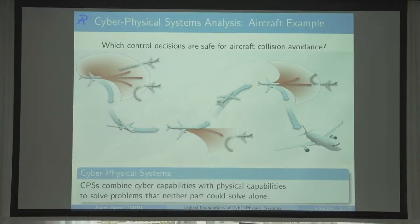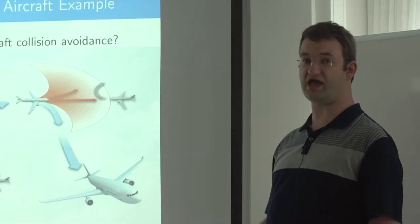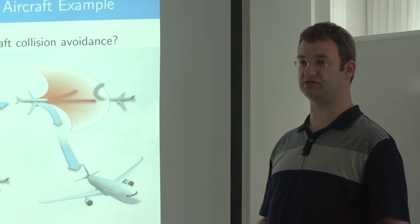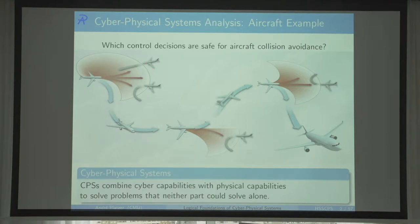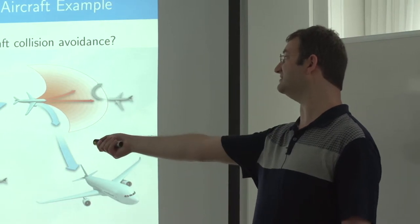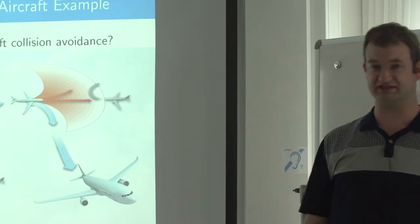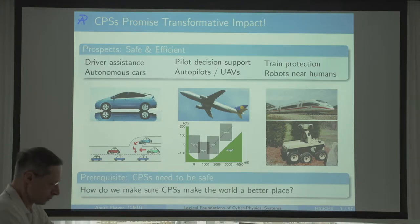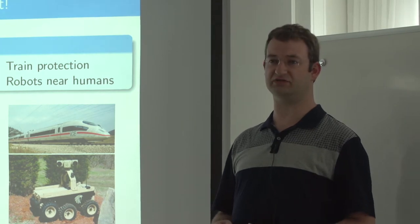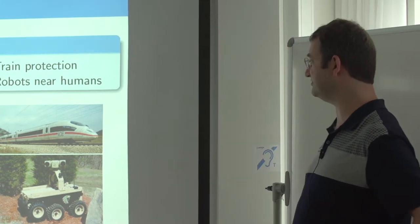Cyber-physical systems exercise exactly that: mixes of cyber capabilities such as communication, computation, and control with physical capabilities, such as the very motion of aircraft through the air, in ways that solve problems that each individually couldn't solve. The computer alone can't make you move out of the way, so you need the physics. The physics alone won't give you good advice, so that's where the computer comes in. CPS promises a transformative impact in driver assistance, pilot decision support, UAVs, train protection systems, ground robots, and many other scenarios.